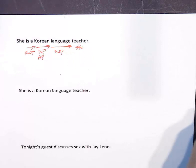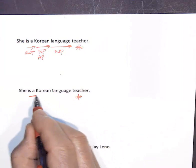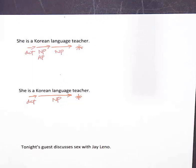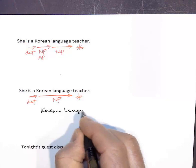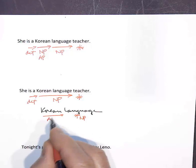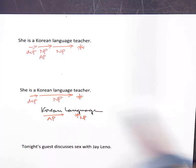In the second analysis, 'teacher' is still the head and 'a' is the determiner, but now 'Korean language' is one modifier — a noun phrase where 'language' is the head and 'Korean' is an adjective phrase modifier. This means she's a Korean-language teacher — that's what kind of language she teaches: she teaches Korean.